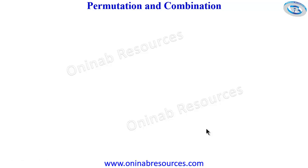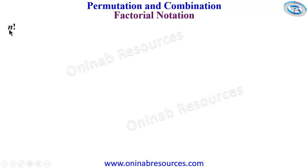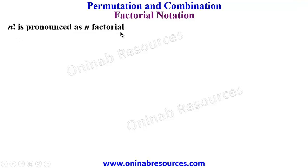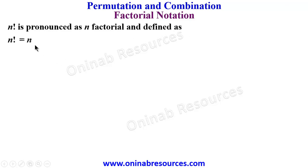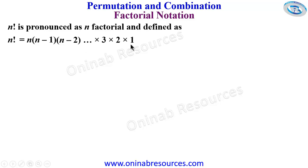Hello, welcome to this tutorial on permutation and combination. In this video we'll be looking at factorial notation. We have n exclamation mark, pronounced as n factorial, and defined as n factorial equals n times n minus 1 times n minus 2, up to times 3 times 2 times 1. This is the expansion of n factorial.